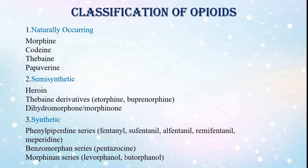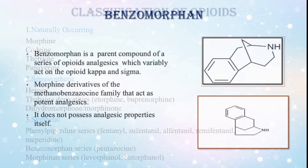Third is synthetic. Phenylpiperidine series: fentanyl, sufentanyl, alfentanyl, remifentanyl, and meperidine. Benzomorphan series: pentazocine. Morphinan series: levorphanol and butorphanol.